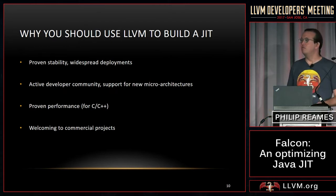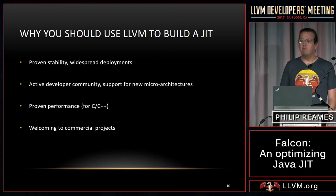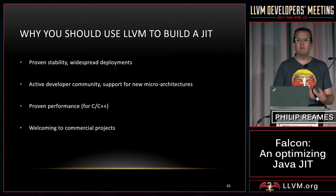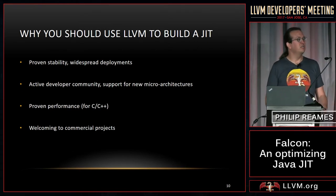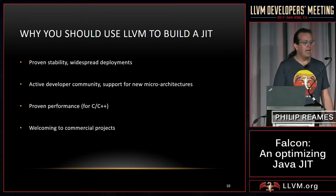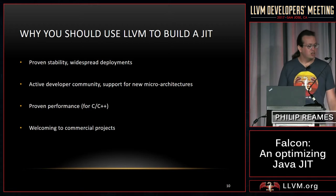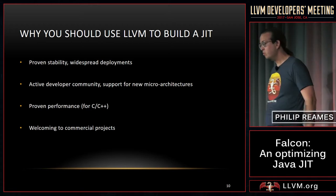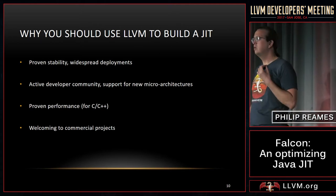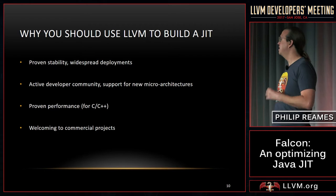Moving on to some of the lessons we've learned — this is the boring slide, nothing new: all the reasons why you should use LLVM to build a JIT. First of all, there's all of you folks — the fact that we can leverage the work you put in on a daily basis is monumentally important. We've picked up all the work done on new microarchitectures for x86, which has been massively beneficial. There's also the fact that clang and as a result LLVM is very widely deployed and thus very widely tested, which is a major advantage. And there's proven performance of clang generating high-quality code — though the caveat is it's C and C++ performance, not Java performance, and we'll come to that.